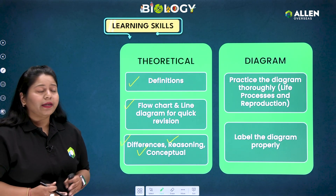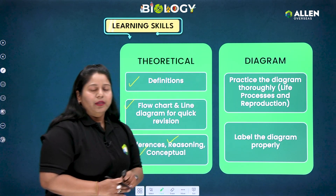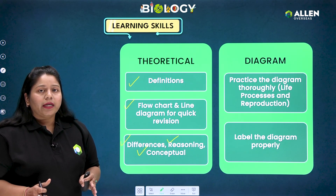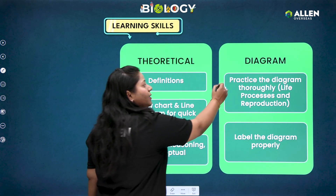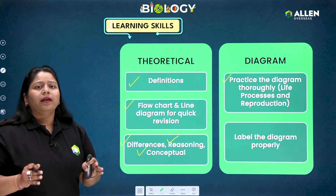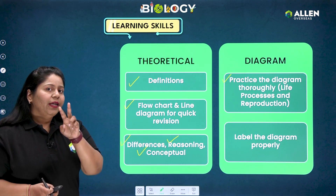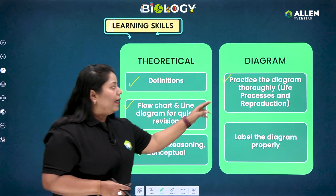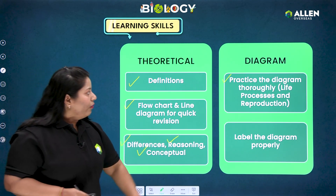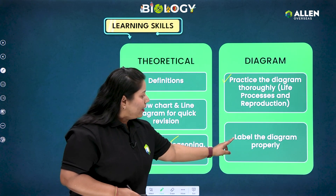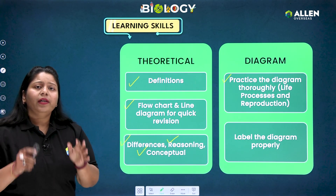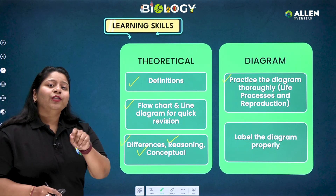The second aspect of our subject is diagrams — diagrams which make the backbone of our biology. You have to practice diagrams thoroughly. When we are talking about diagrams, maximum diagrams are there in two major chapters: life processes and reproduction. Once you are practicing the diagram, the second aspect is to label the diagram properly — you have to label them nicely and mention the figure.